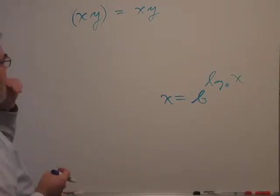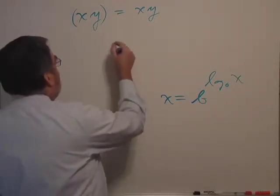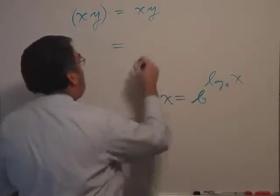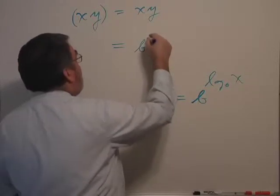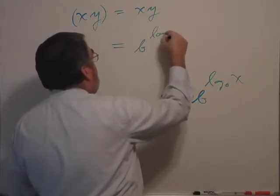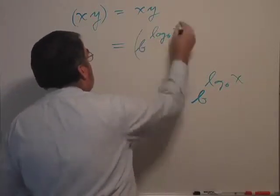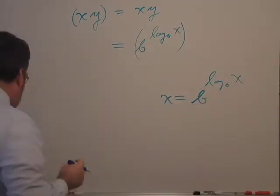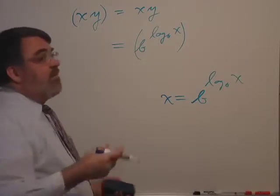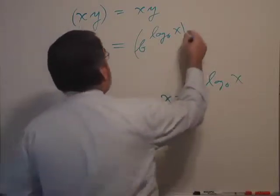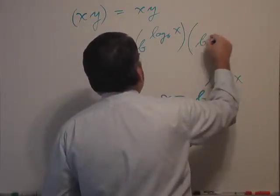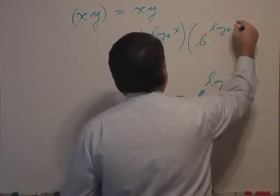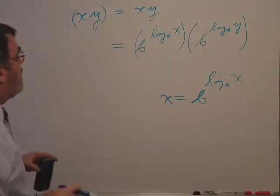Now I'm going to, well let me show you the right side first. I'm going to replace x with this formulation. So x is b raised to the log base b of x. That's exactly this little equation there. And I'm going to do the same thing with y. Y would be b raised to the log base b of y.